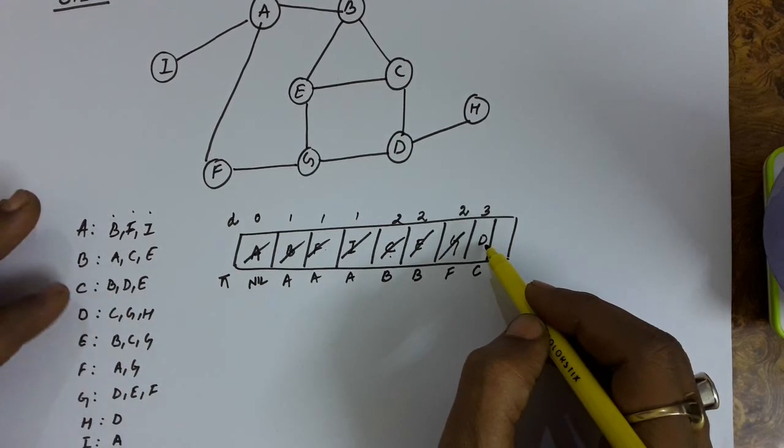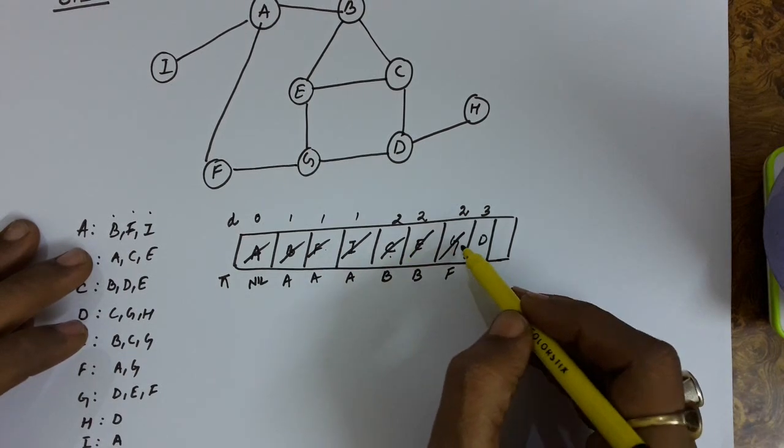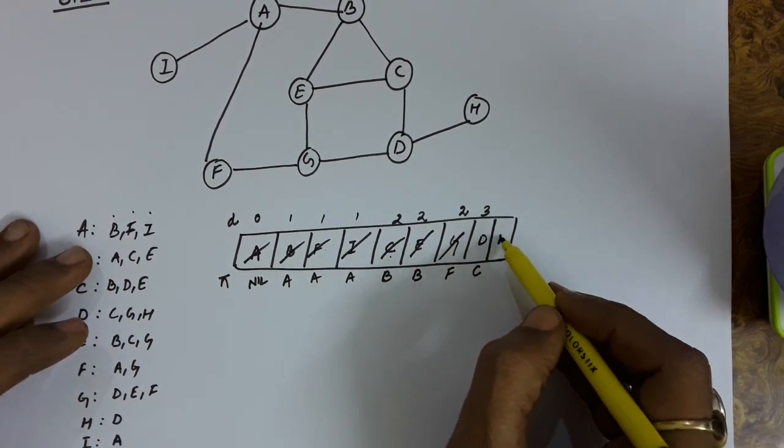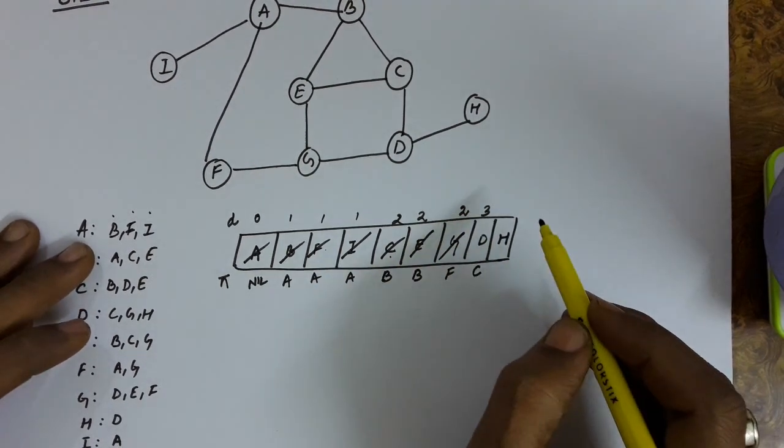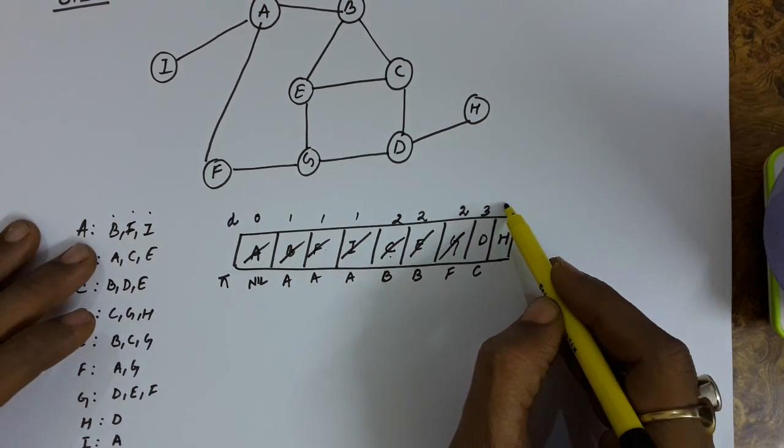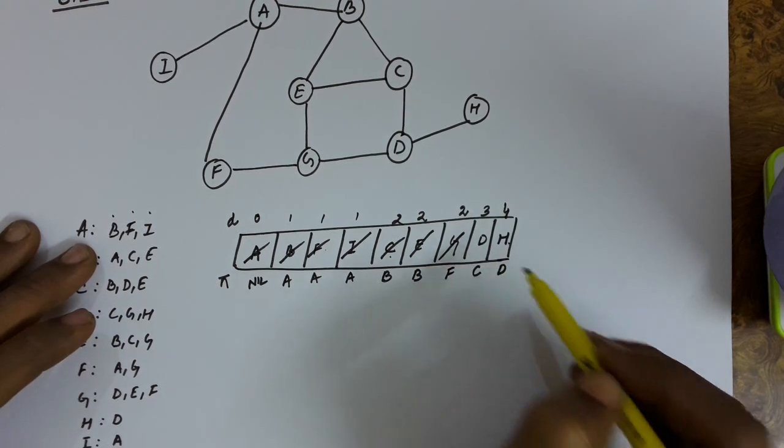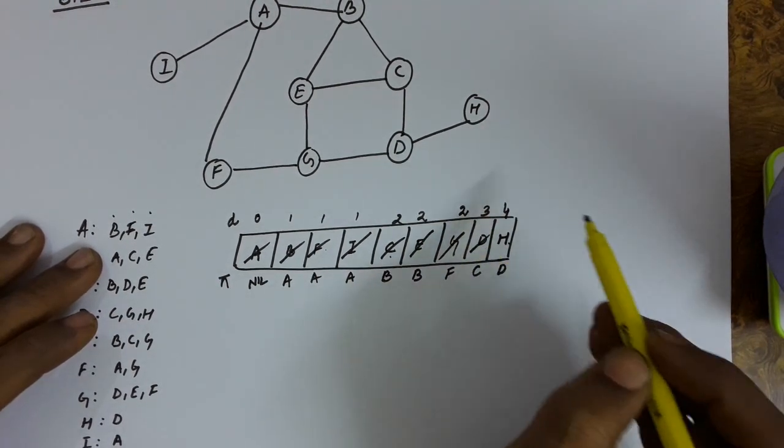See the connections from D. These are C, G and H. So C, G, H is not there. So insert this H. The distance of H will be set one more than the distance of D, four. And the predecessor of H will be D. Remove this D.